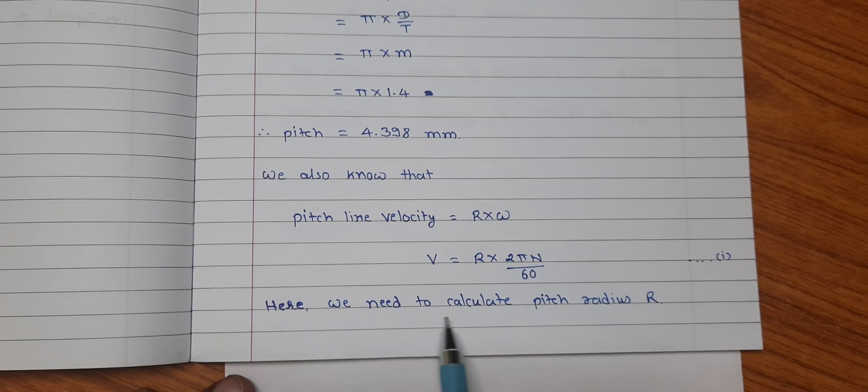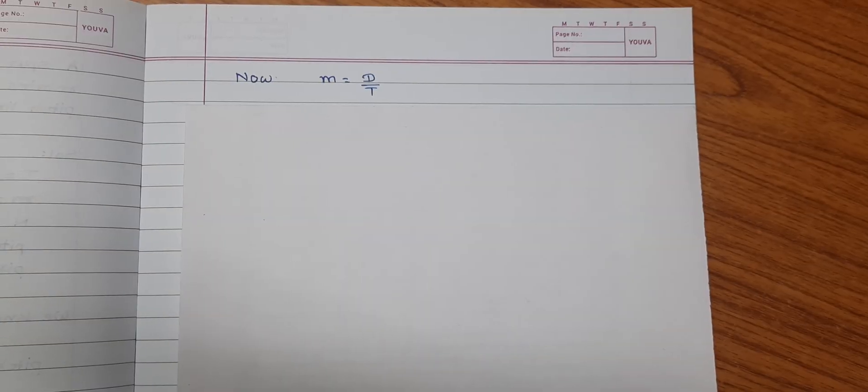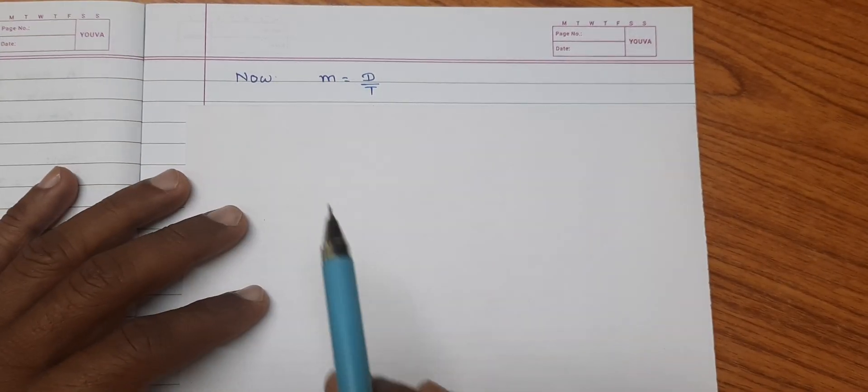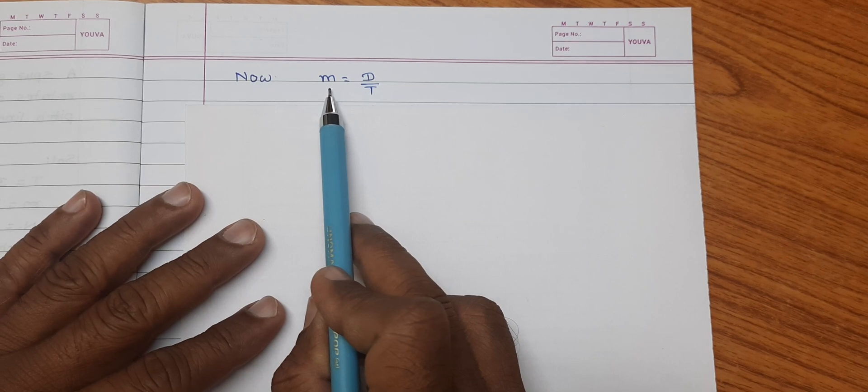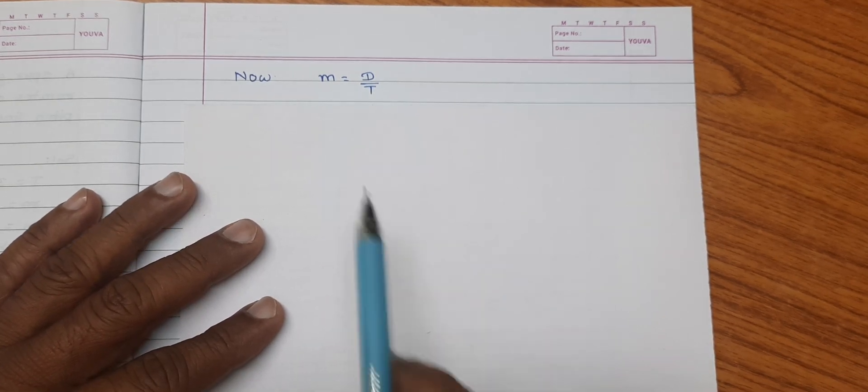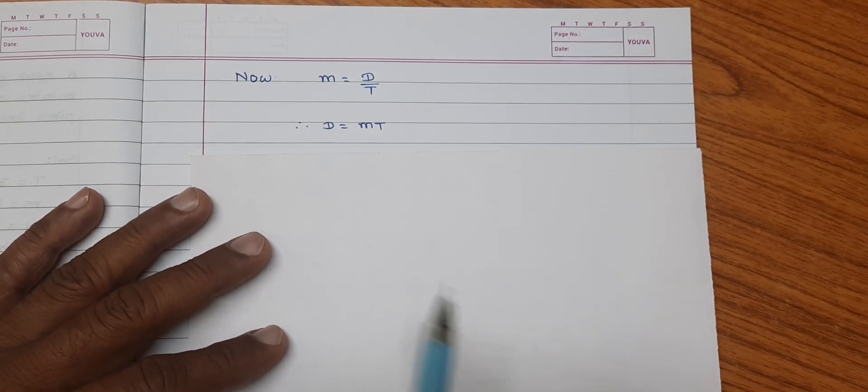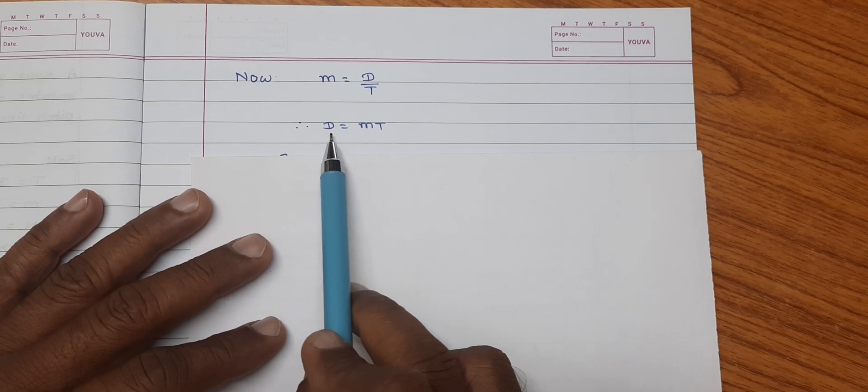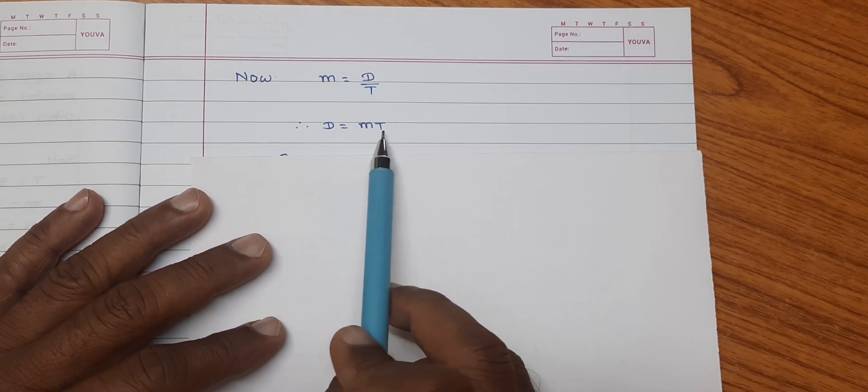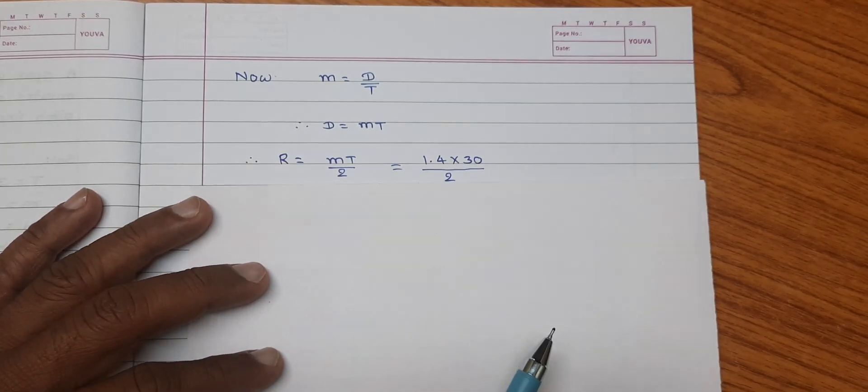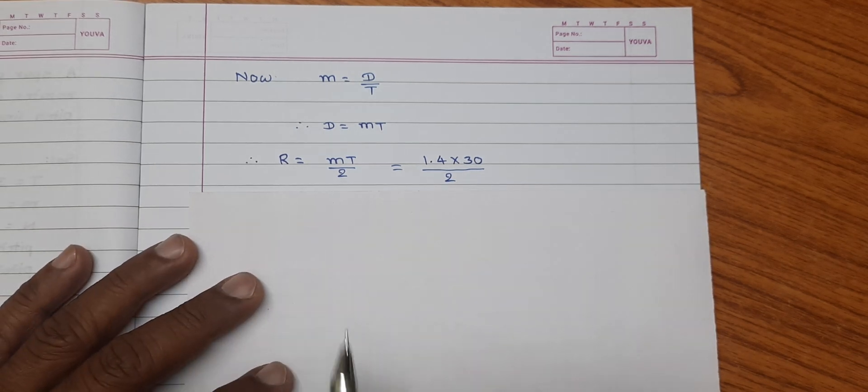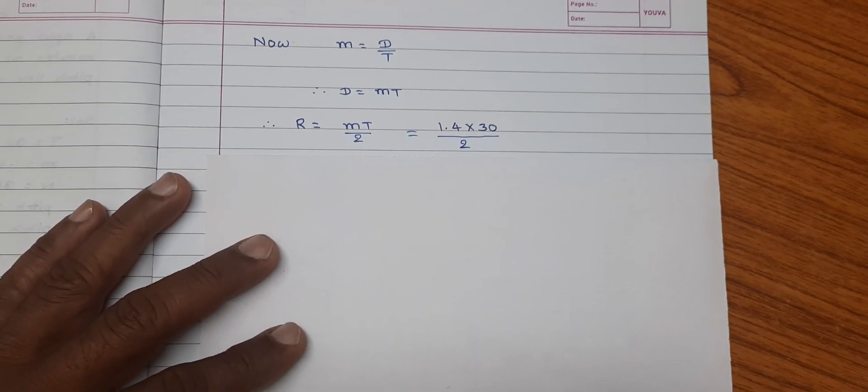Here, we need to calculate the pitch radius r. Here, we know that module m is equal to d by t. So diameter, pitch circle diameter of gear is m into t. So the pitch circle radius is equal to m t divided by 2.